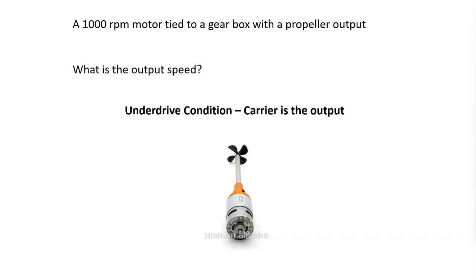So the problem we're going to look at today — I just put this image up here of a boat motor, of an outboard motor — is a 1000 RPM motor tied to a gearbox with a propeller output. What is the output speed? That's your underdrive output speed, so the carrier is going to be the output. I want to give you two examples: one is going to be a tabular method, the other one is going to be an algebraic method, and we're going to look at both of the possible underdrive conditions.